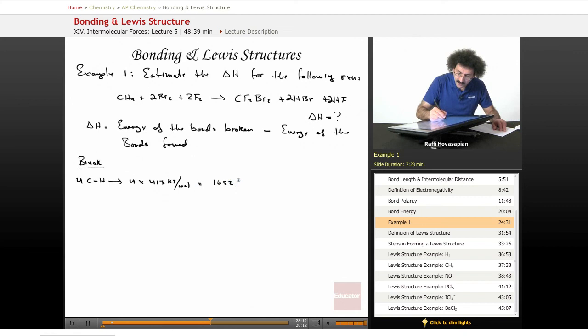Okay. So, that equals 1652 kilojoules. We're breaking two Br-Br bonds. So, that's going to be two times 193 kilojoules per mole equals 386 kilojoules. Oh, in case you're wondering, this is kilojoules. This is kilojoules per mole. What happened to the mole?